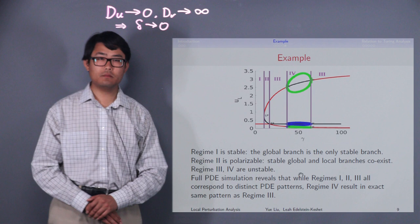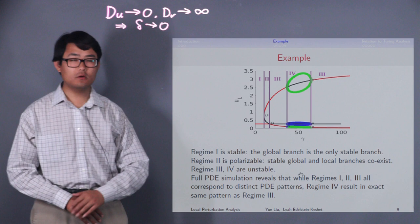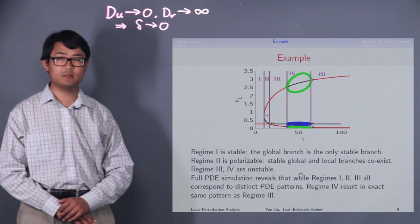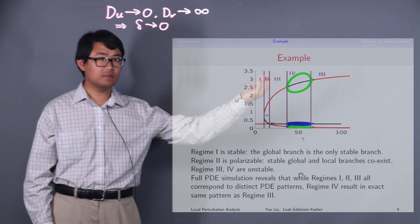For this example, we can observe four distinct regimes. In regime one, that is a regime with the lowest gamma value, we observe only one stable global branch of equilibrium. This means no pattern is possible in this regime since all spikes would decay back to the homogeneous state.